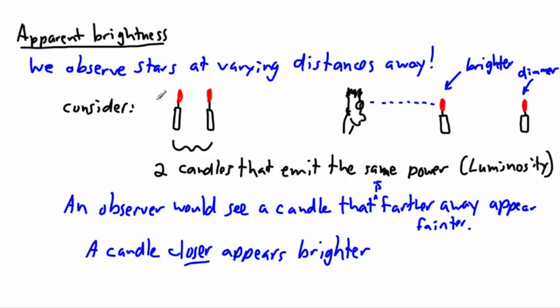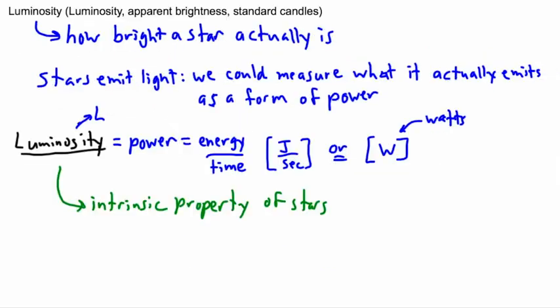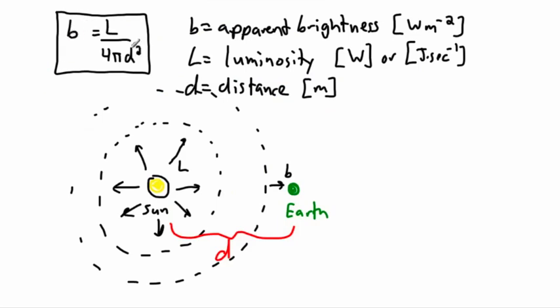This is why in astronomy we're constantly looking for some sort of property or trick to standardize a candle effect. When we talk about standard candles in astronomy, what we're trying to do is find some property of a star that allows us to know what its luminosity really is. And if we know the luminosity, then we can easily measure the apparent brightness, and from that we can calculate the distance.